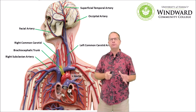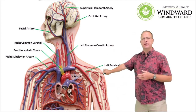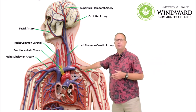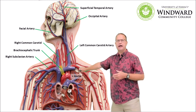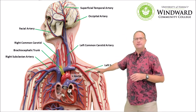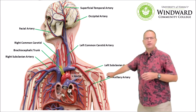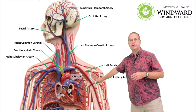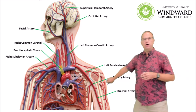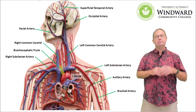The third blood vessel arising from the aorta is the left subclavian artery — the third branch off the aorta — and subclavian means it goes underneath the clavicle. Just like those roads that change names, this eventually becomes the axillary artery once we get into the armpit, and eventually it becomes the brachial artery down in the arm. It was all one big vessel, but its name changes based on location.